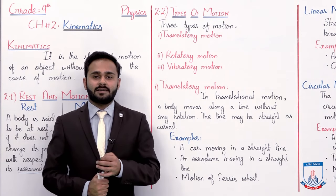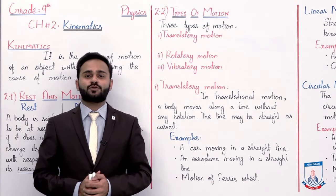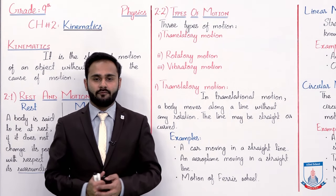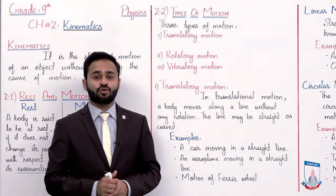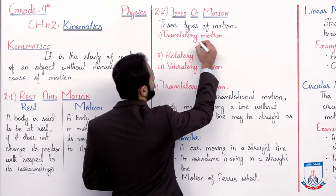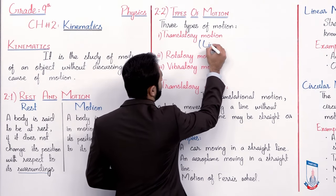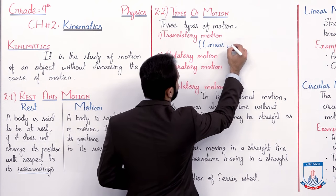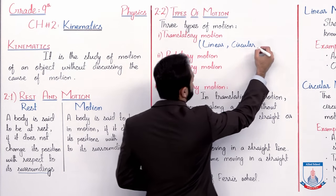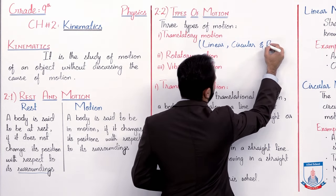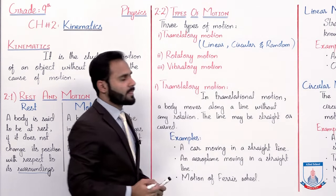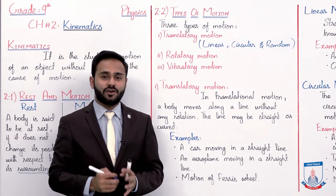Now, the next topic: types of motion. There are three types of motion and they are: translatory motion, rotatory motion, and vibratory motion. Translatory motion ko further aage three types mein divide kar diya gaya, and they are: linear motion, circular motion, and random motion. So first of all hum discuss karte hain translatory motion ko.